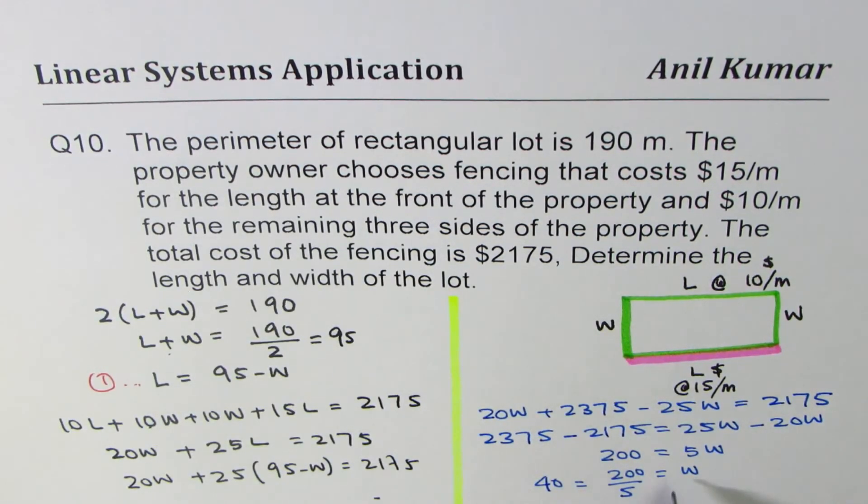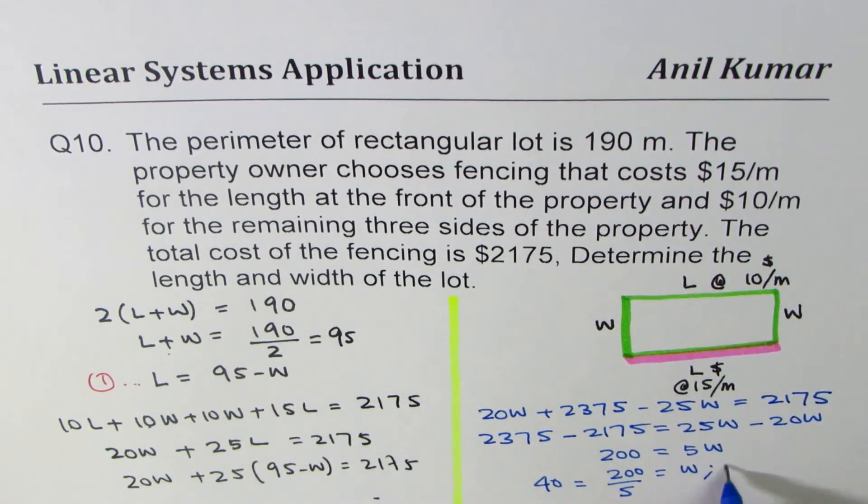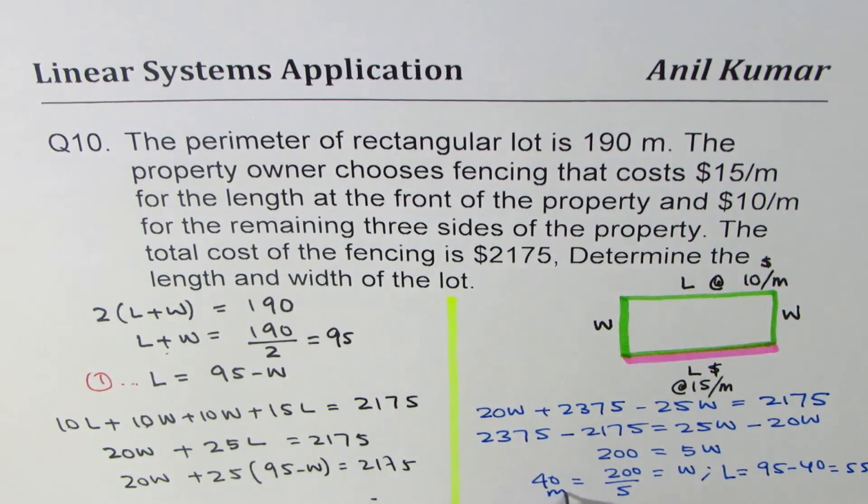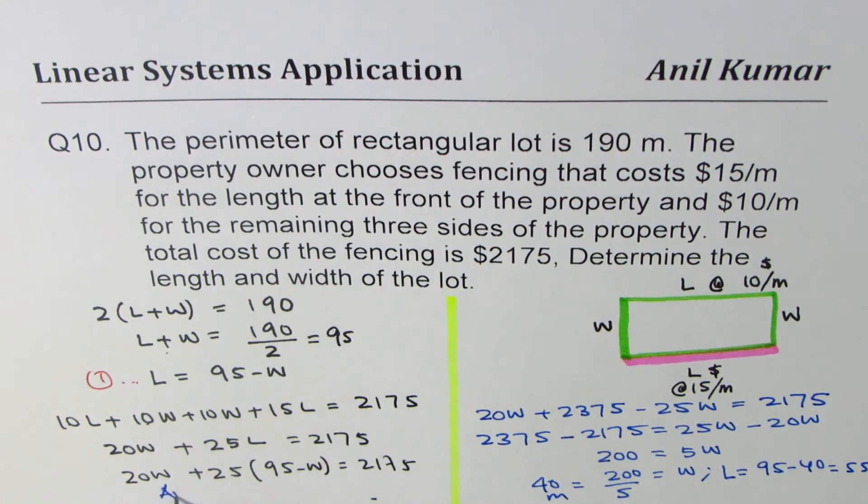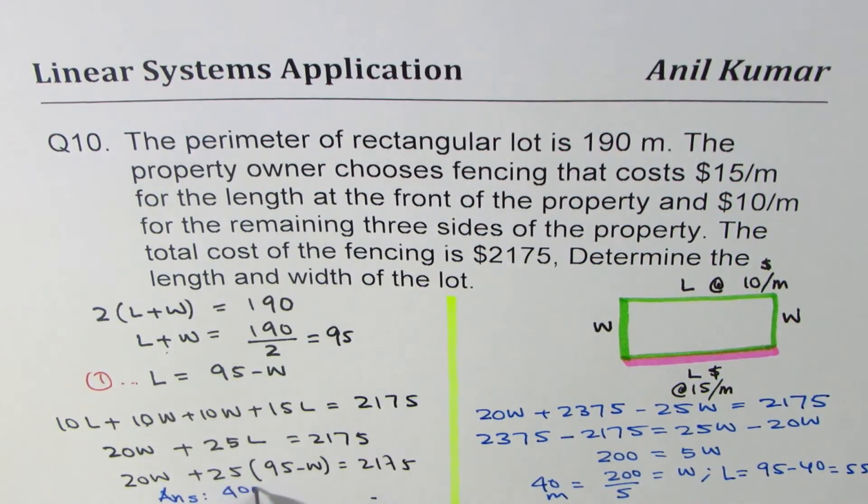How about length? Length is 95 minus 40, right? So we get length as 95 minus 40, which is 55. And the units are in meters. Let's write down meters here. And we can write down our answer as the dimensions are 40 meter by 55 meters.